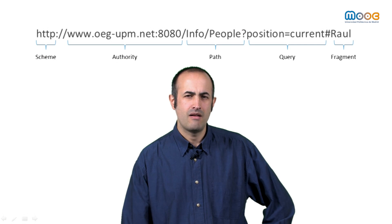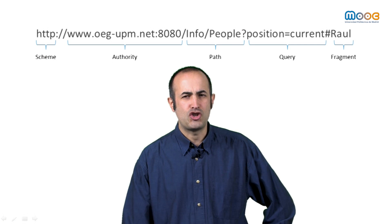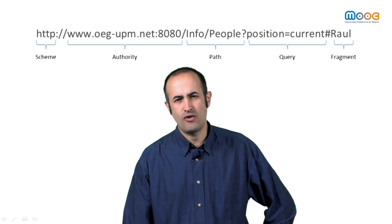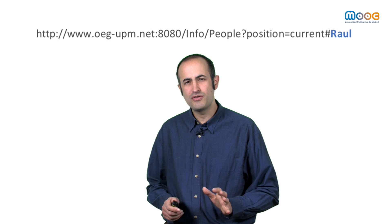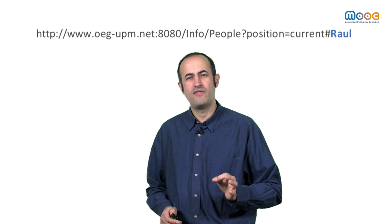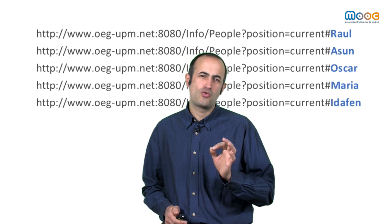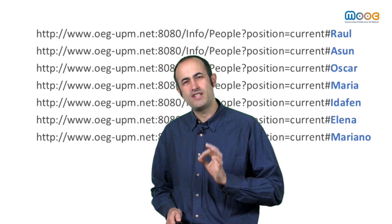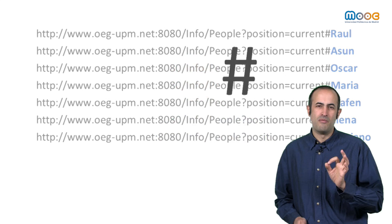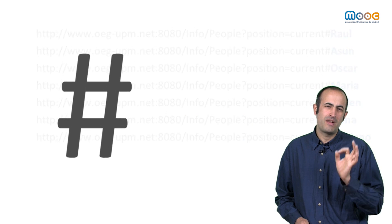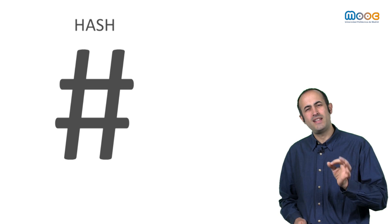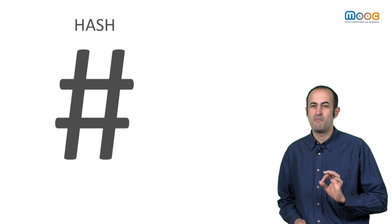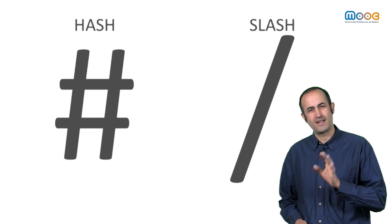When we generate our data, we have to ensure that all the resources that we generate have different URIs. For now, we are going to focus on the fragment identifier of the URI, which is the string that allows the unique identification of our resources. More specifically, we will focus on the character that separates such identifier from the rest of the URI, which can be a hash or a slash.